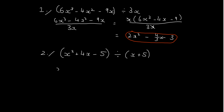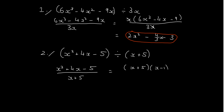So we've got x squared plus 4x minus 5 over the top of x plus 5. Give the top a factorize, and we've got x plus 5, x minus 1. Over x plus 5. Give these two a cancel, and we've got x minus 1.